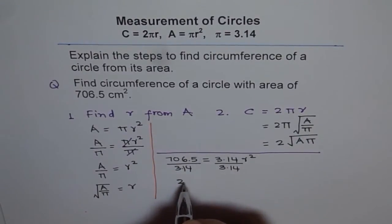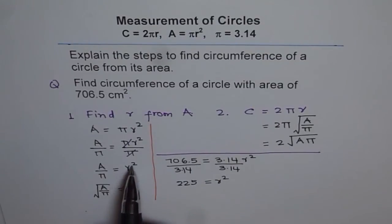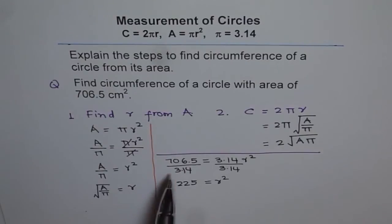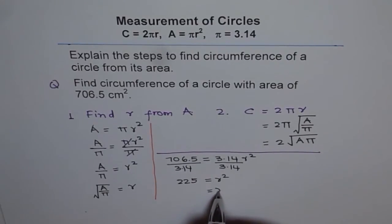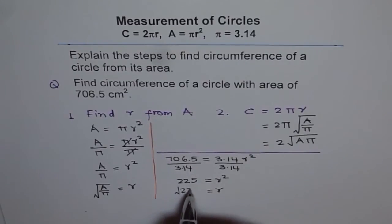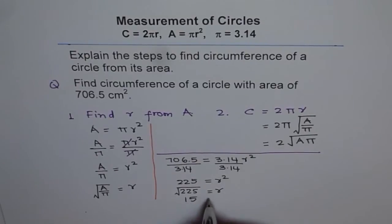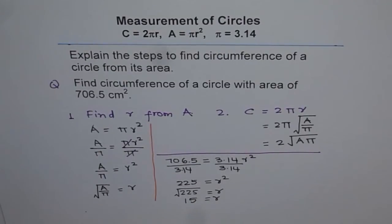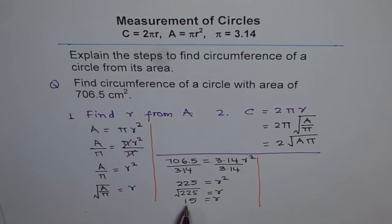So we get 225 equals r². Now what is r? R squared equals area divided by π — that is 706.5 divided by 3.14. To get r we need to square root it, so r equals the square root of 225. The square root of 225 is 15, so r equals 15. For a circle with area 706.5, the radius is 15.